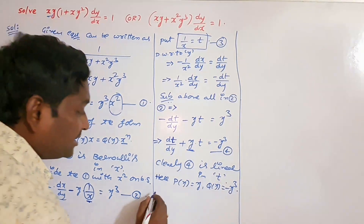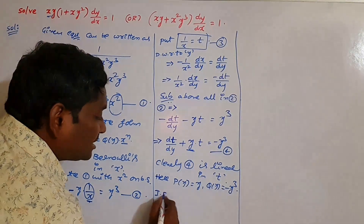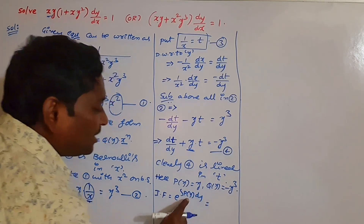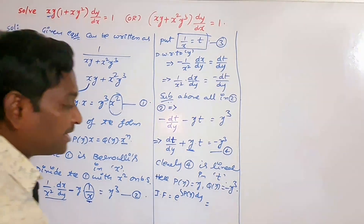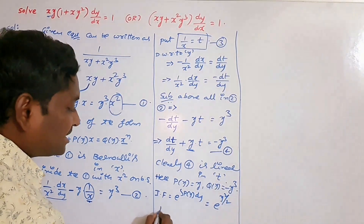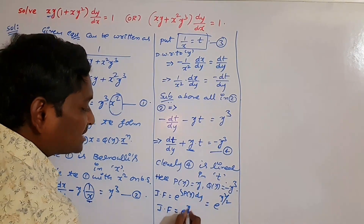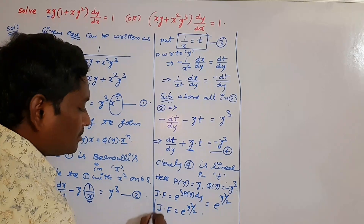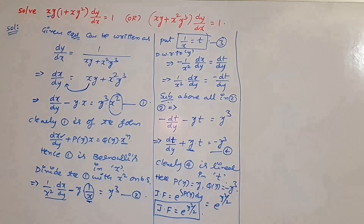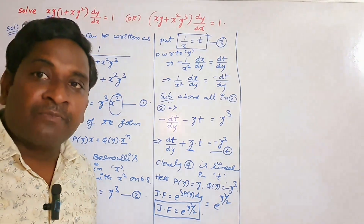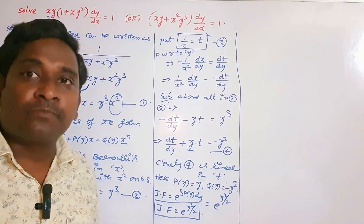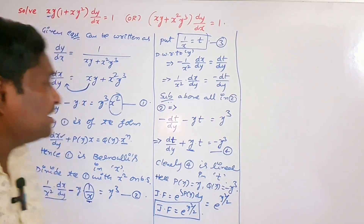Now we compute the integrating factor for this linear equation. The integrating factor is e to the power of the integral of p of y dy. Since p of y is y, the integral of y is y squared by 2. So the integrating factor is e to the power y squared by 2.